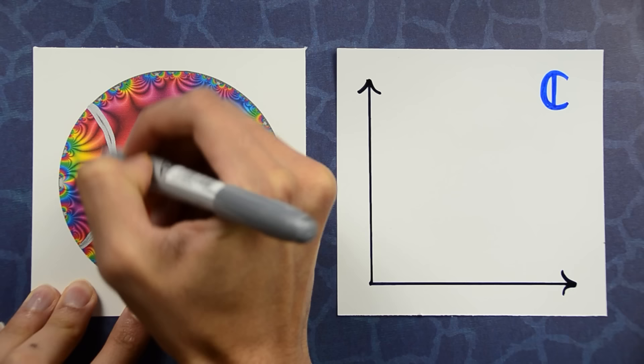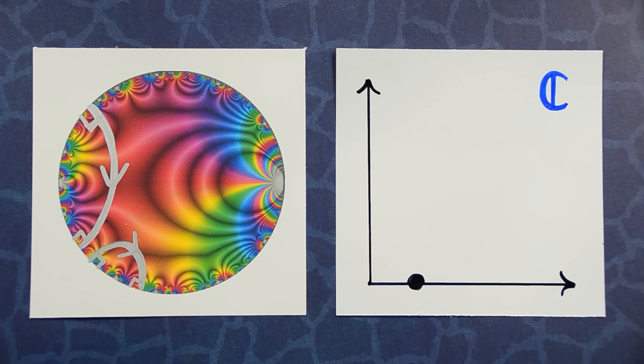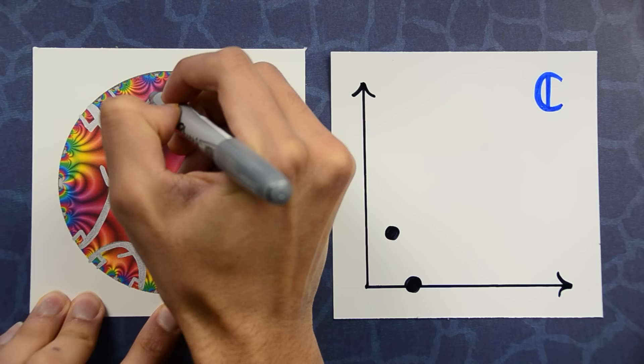That is, they added up the values of this function over the arc. That gives you a complex number. Let's plot that over here on the right. Now take another arc in the circle and integrate the function over that arc. That gives you another complex number. Let's plot it on the right. Now do that for more and more arcs in the circle.